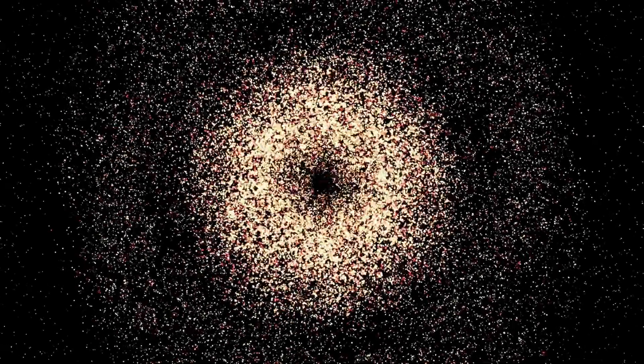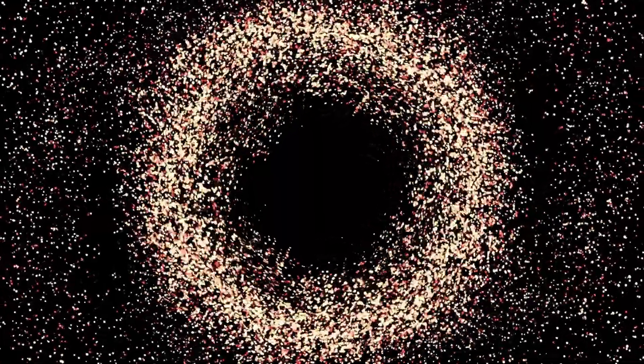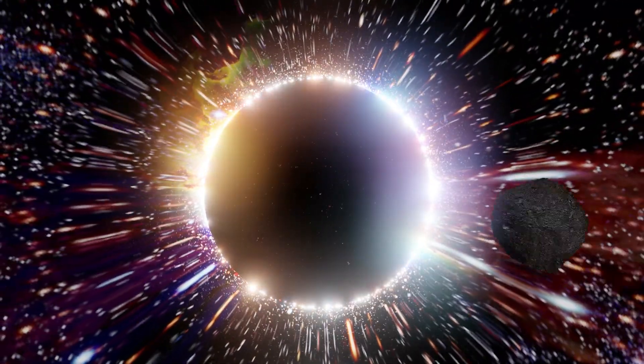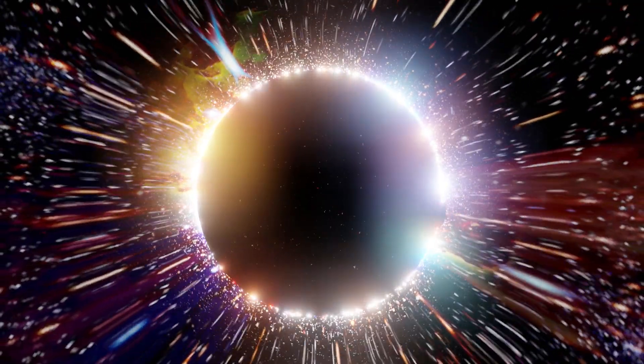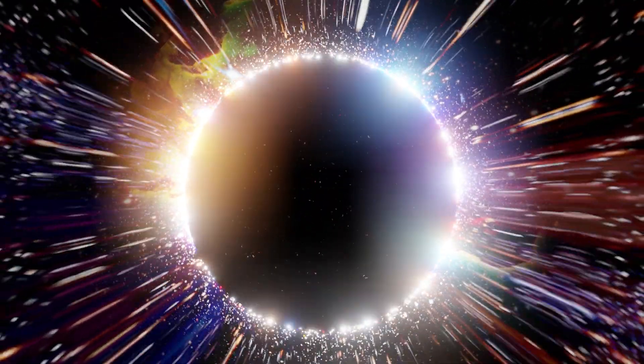According to this theory, the event horizon of a black hole is not a sharp boundary, but rather a region where the fuzzball structure begins. As matter and energy fall into the black hole, they become part of this fuzzball structure, adding to its mass and energy.